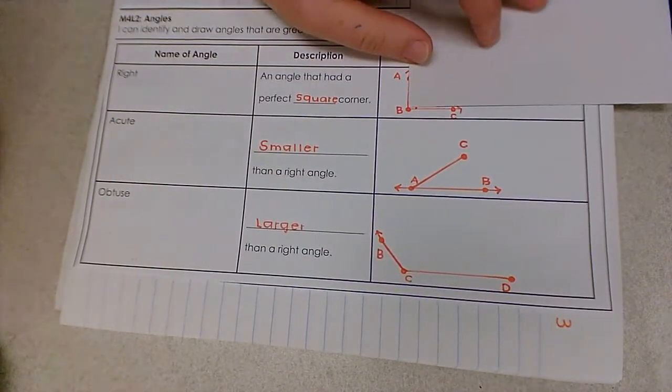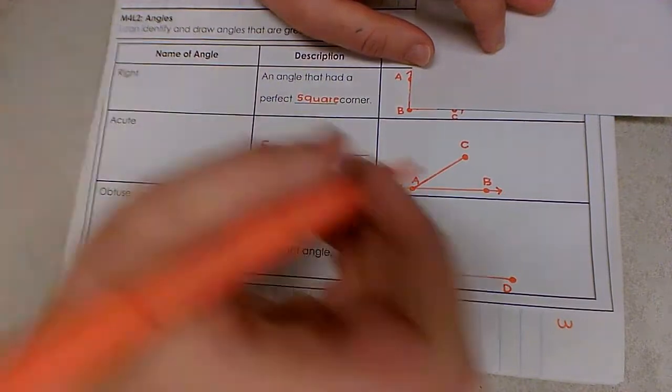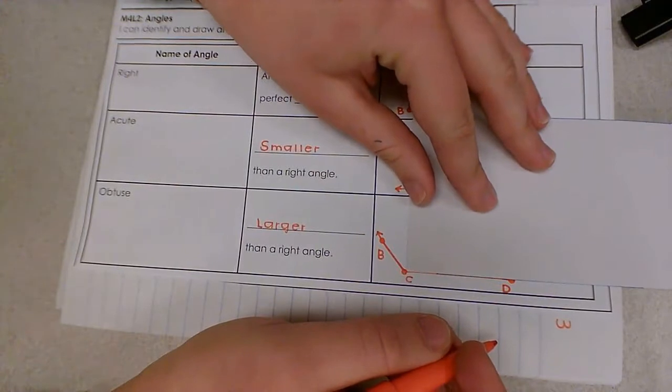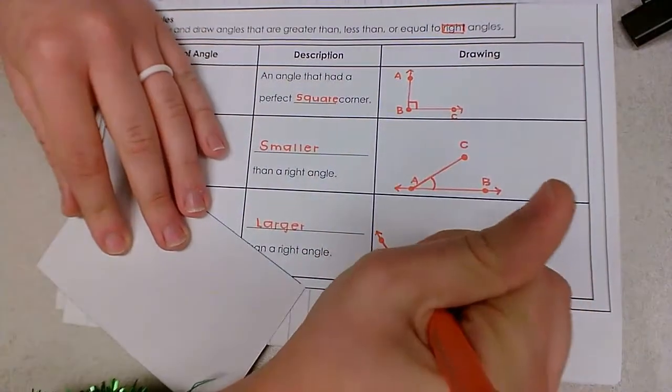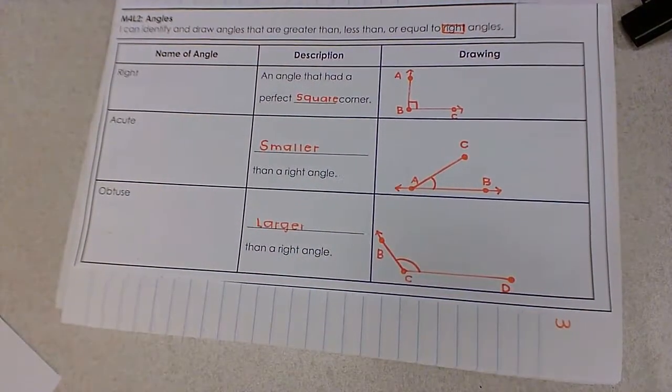Remember when we were able to line up our note card into the corner of the right angle, we marked it with a square corner. With this angle, because we can't form a perfect square corner, we won't label it with a square. Instead, we're going to use a semicircle, part of a circle's curve, to label that angle.